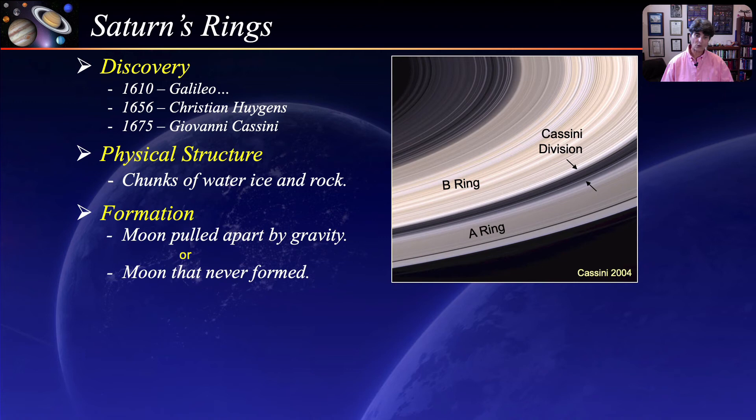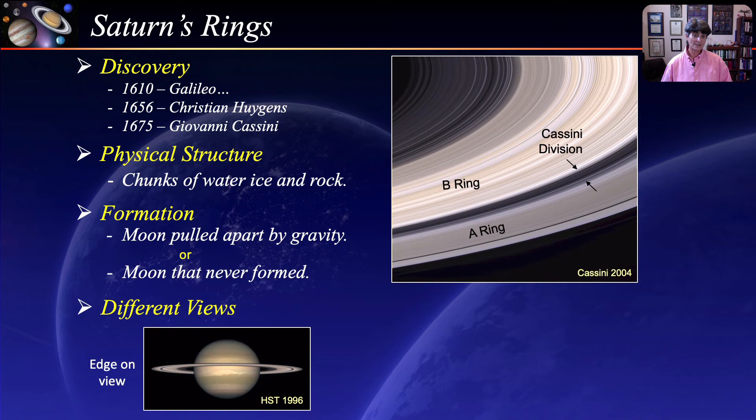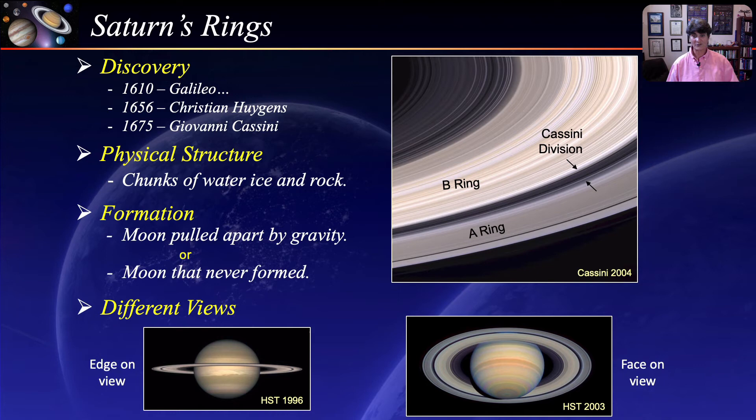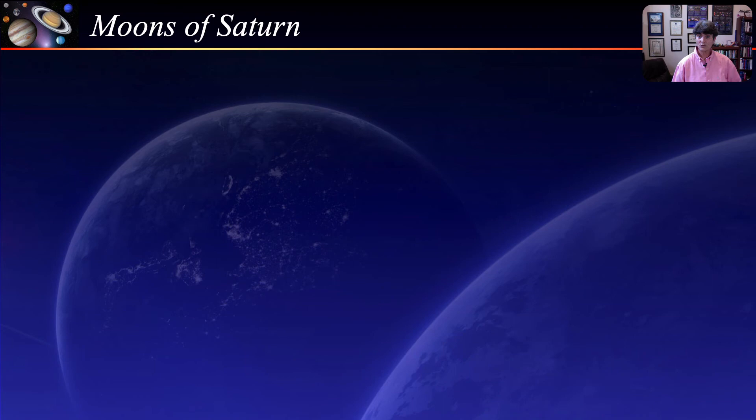Because of Saturn's axial tilt, we get different views of the rings as seen from Earth. One image taken by the Hubble Space Telescope in 1996 shows the rings almost edge-on, and another taken in 2003 shows a face-on view of the rings. Saturn has 82 confirmed moons. The largest moon is Titan, which is actually larger than Mercury.